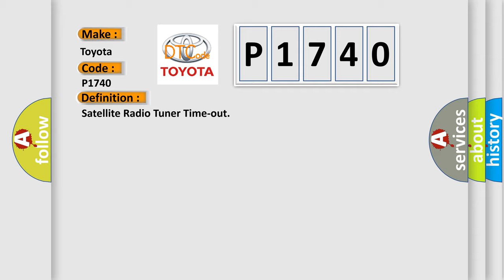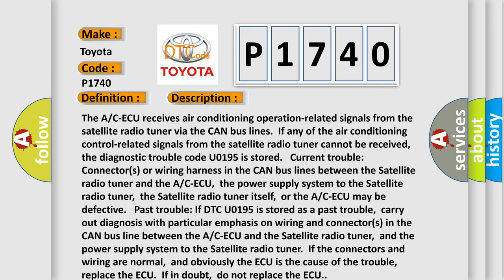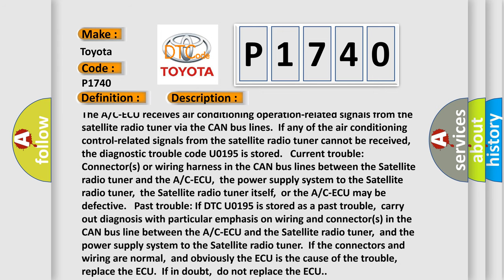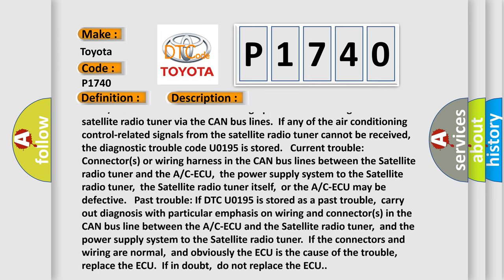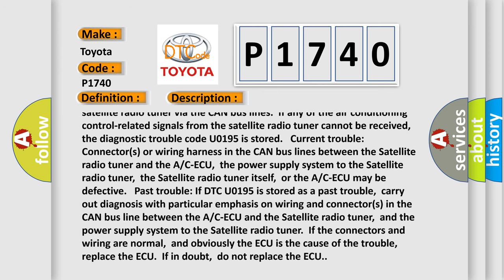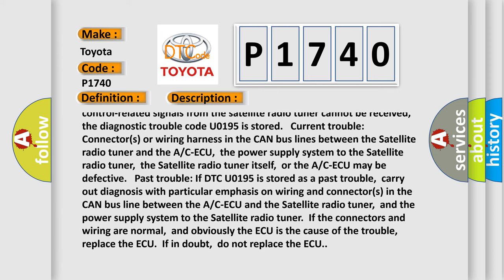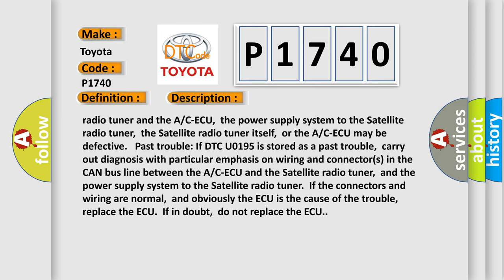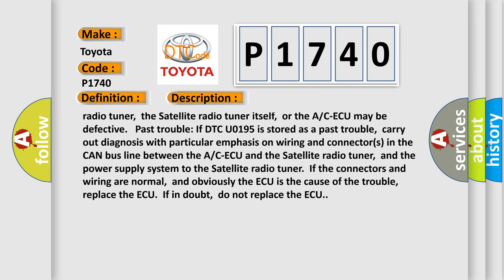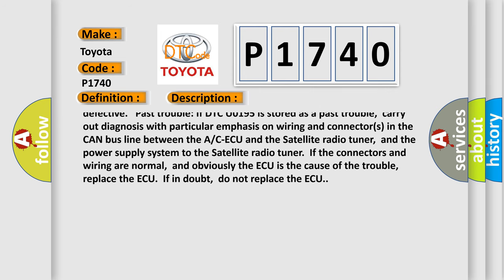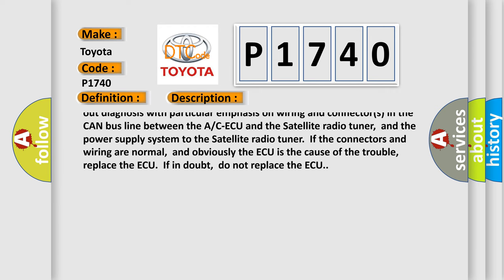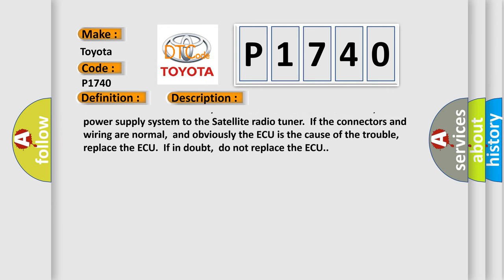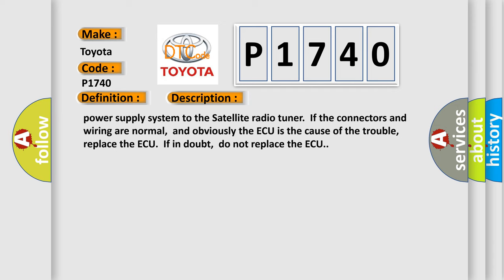The ACAQ receives air conditioning operation-related signals from the satellite radio tuner via the CAN bus lines. If any of the air conditioning control-related signals from the satellite radio tuner cannot be received, the diagnostic trouble code U0195 is stored. Possible causes include trouble with connectors or wiring harness in the CAN bus lines between the satellite radio tuner and the ACAQ, the power supply system to the satellite radio tuner, the satellite radio tuner itself, or the ACAQ may be defective. If DTC U0195 is stored, carry out diagnosis with particular emphasis on wiring and connectors in the CAN bus line between the ACAQ and the satellite radio tuner, and the power supply system to the satellite radio tuner. If the connectors and wiring are normal, the ACAQ is likely the cause of the trouble.